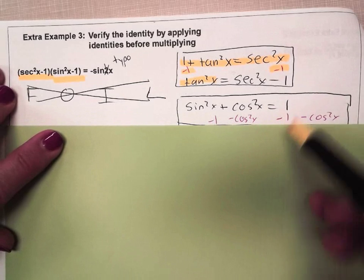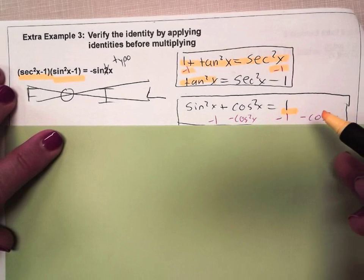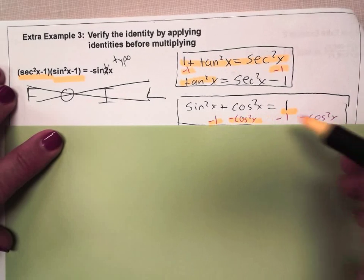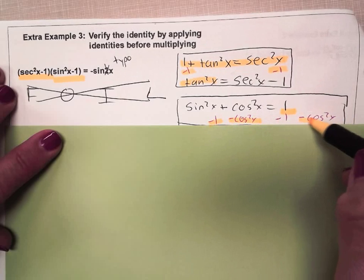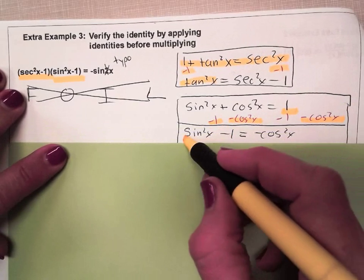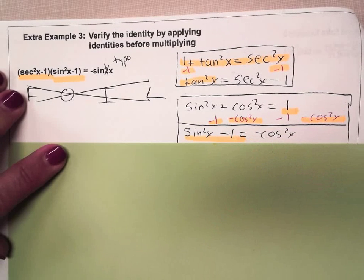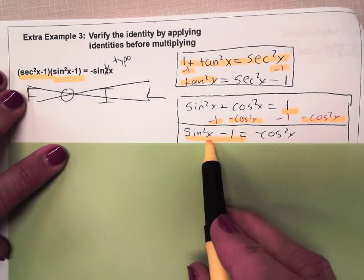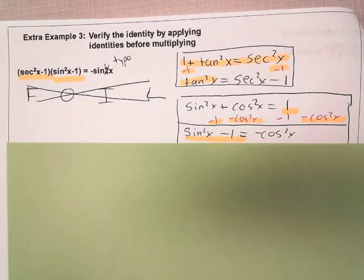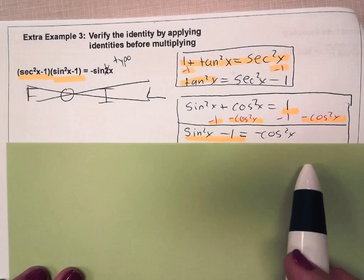Subtract 1 from the right side of the equal sign and then again on the left. Subtract cos²x from the left of the equal sign and then again on the right. And then you're left with exactly what's in the parentheses, sin²x - 1. And you're going to replace sin²x - 1 with -cos²x.